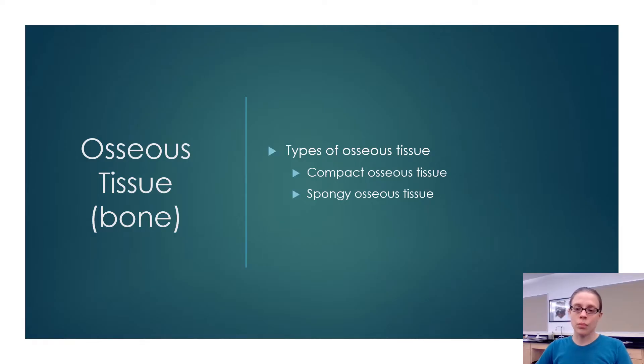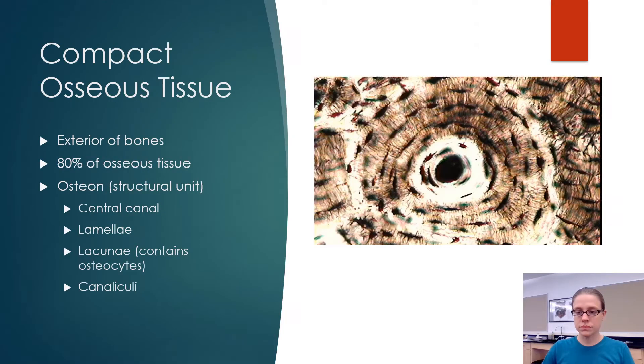The proper name for bone is osseous tissue and there are two types of osseous tissue, compact osseous tissue and spongy osseous tissue. Compact osseous tissue is found on the exterior of bones and it accounts for 80 percent of osseous tissue so it's much more common than spongy osseous tissue.